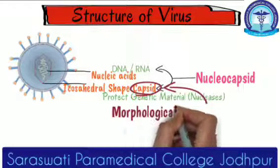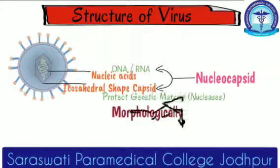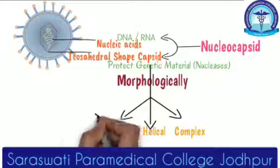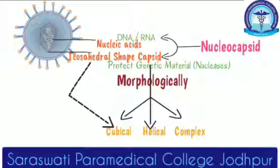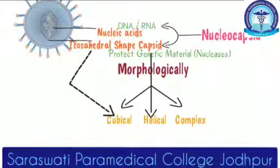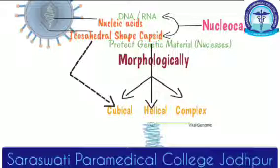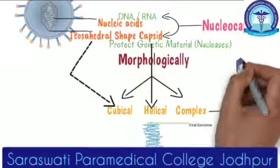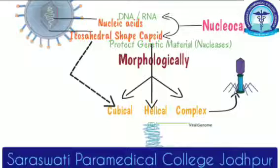Based on morphology and symmetry of the capsid, they are divided into three types: cubical, helical, or complex form. In the cubical form, a typical example is icosahedral, which is composed of 20 equilateral triangles. Please remember, this is very important for BSc level students. In helical, we have a spiral form of genetic material. In case of complex, it does not contain any cubical or helical form — it is complex in nature and will be discussed later.